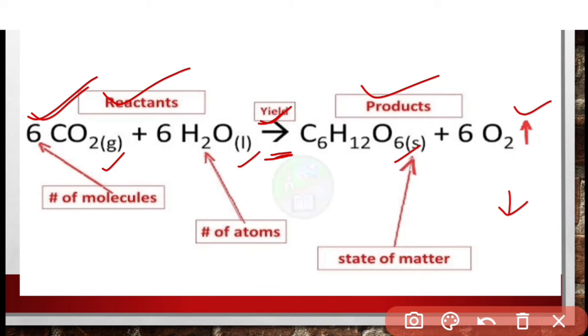Here in this equation you can see 2, 6, 12, they are written. Actually these numbers represent the number of atoms of each element present. And this 6, it represents the number of molecules of a particular substance.